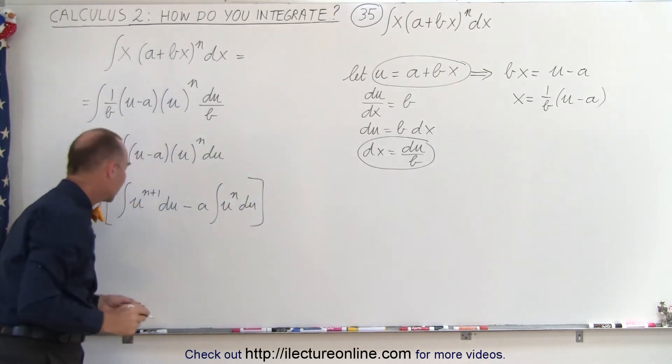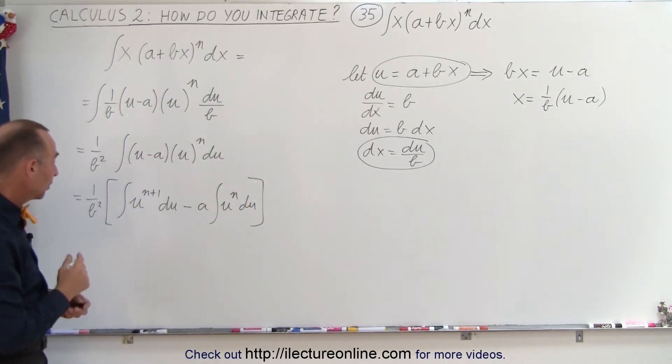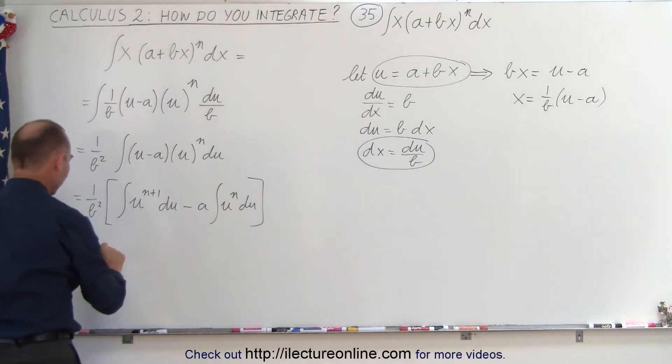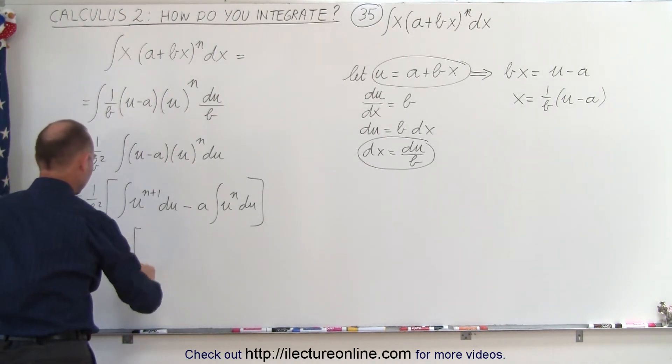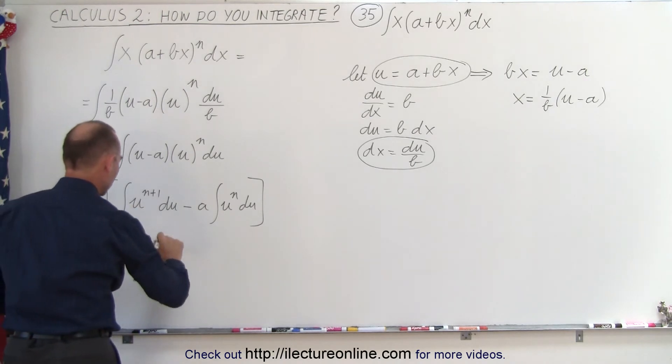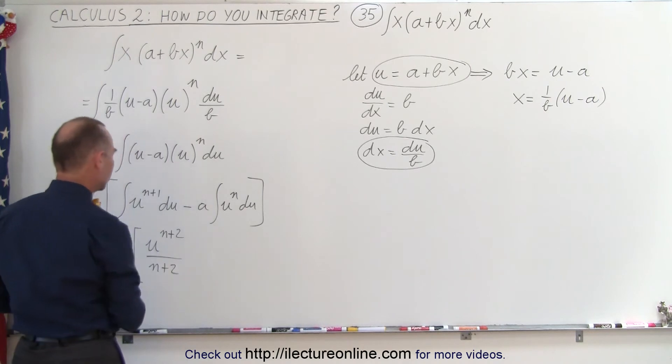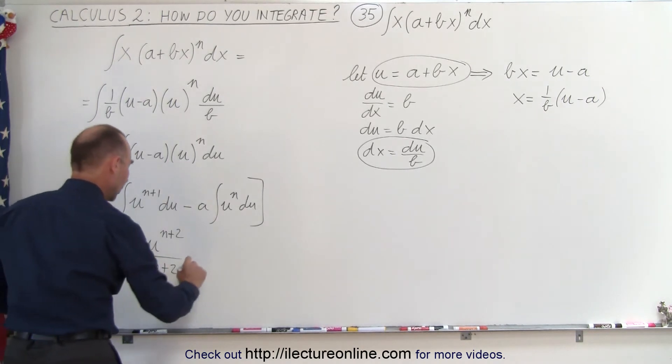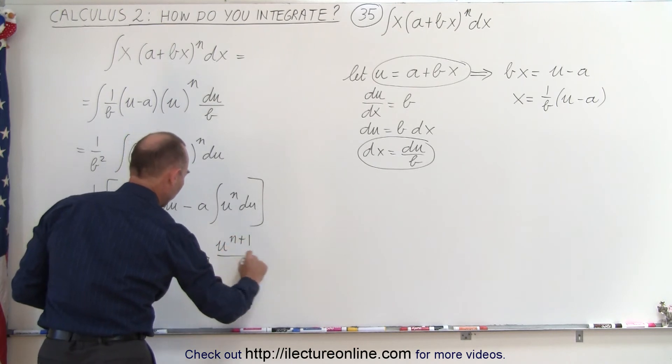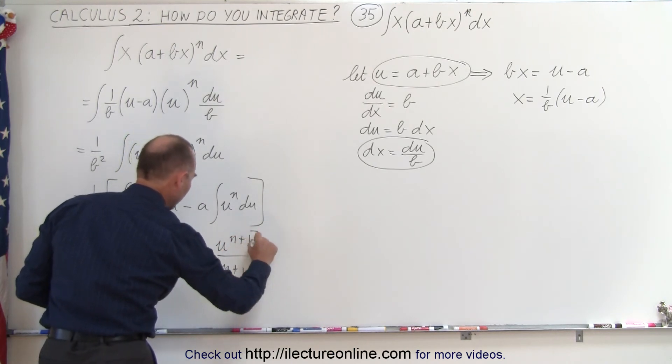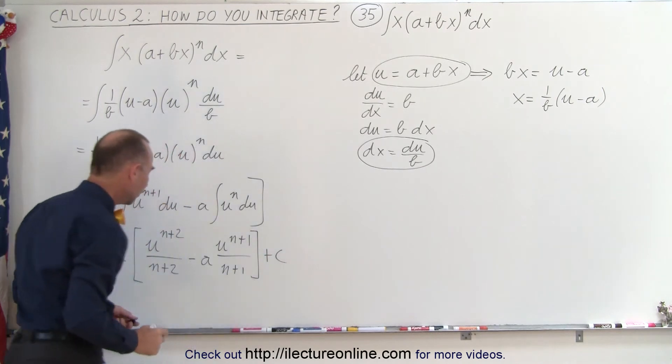Now we have those two integrals, which we can easily integrate. This becomes 1/b² times the first integral, which would be u^(n+2) divided by (n+2), the new exponent, minus a times u^(n+1) over (n+1), and a constant of integration.